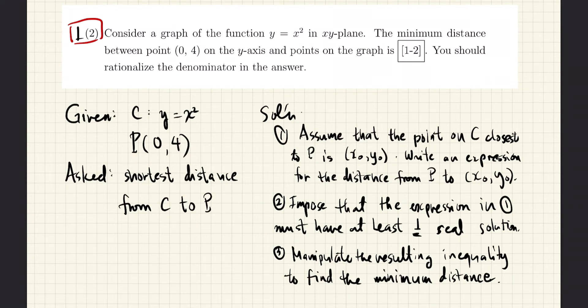First, we assume that the point closest to P is (x₀, y₀). We then write the expression for the distance between P and the point (x₀, y₀).